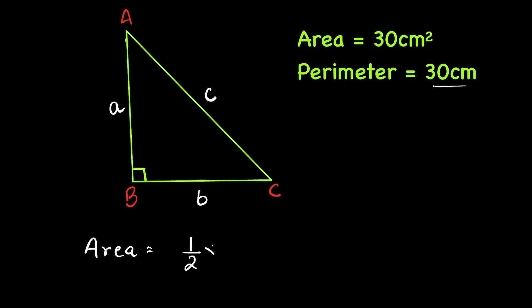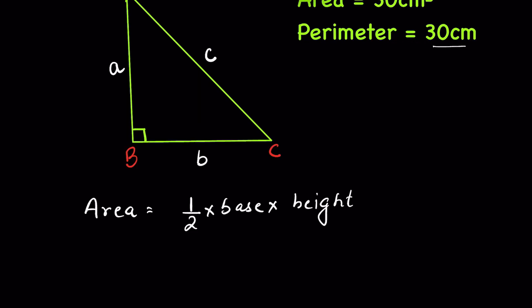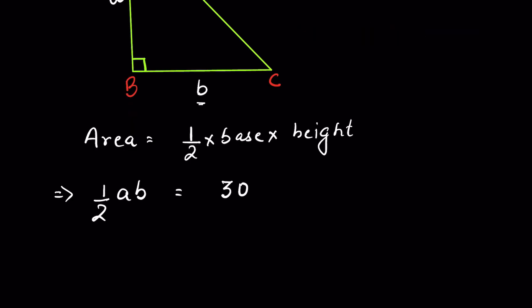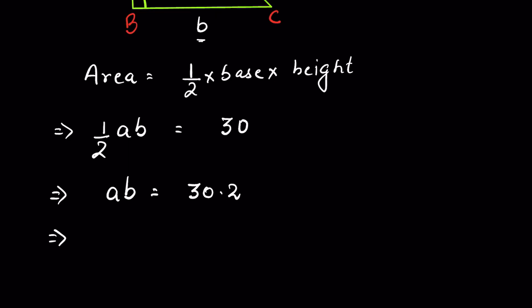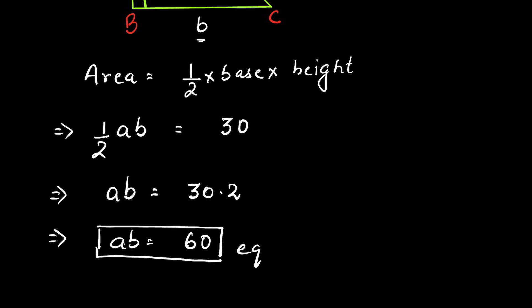The area of a right angle triangle is half into base into height. The area given is 40, that means half times base BC (which is b) times height AB equals 40, or from here we can find AB is equal to 60. Let this be equation one.